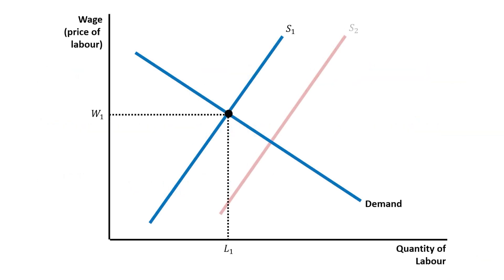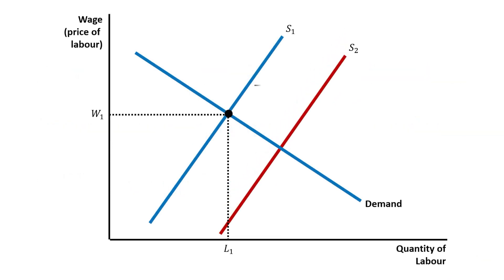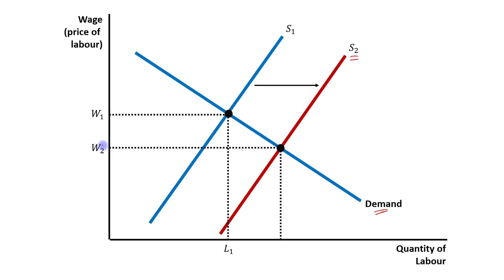As you can see, there is a rightward shift in the supply curve of labor from S1 to S2. The new equilibrium point will be the intersection point of this new supply curve and the initial demand curve, which is this point. And the new equilibrium wage is W2.